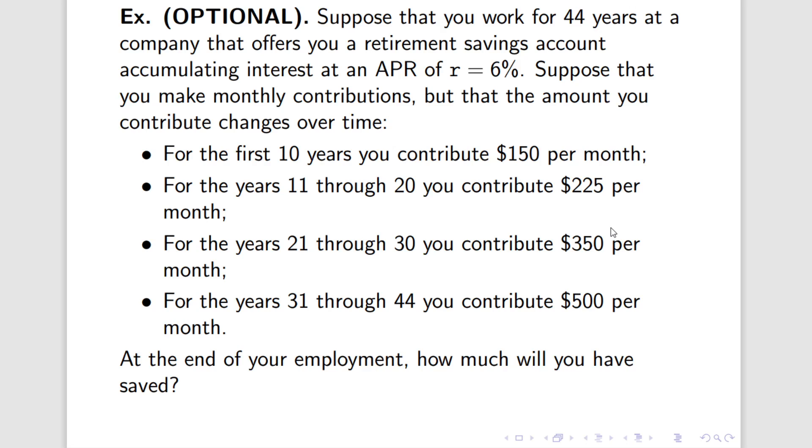You can see it here. You're going to work for 44 years at a company. You're getting an APR of r = 6%. It's going to be monthly contributions, so that means it's compounded monthly, and you make a contribution every single month. And the amounts that you contribute change over time due to automatic escalation. So, in the first 10 years, from year 1 to year 10, you contribute $150 per month. The next 10 years, from year 11 to year 20, you contribute $225 per month. The next 10 years, from year 21 to year 30, you contribute $350 per month. And in the final 14 years, from year 31 to year 44, you contribute $500 per month. The question here is, how much did you end up saving at the end of your working career?